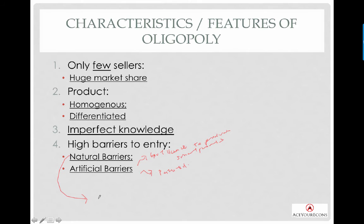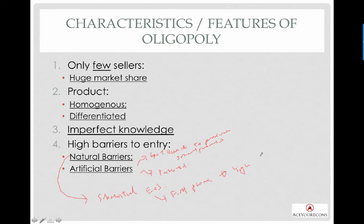For natural barriers to entry, firms have substantial economies of scale. Using Samsung and Apple as examples, in order to produce the first phone you will incur very high fixed costs — fixed costs in the production plant and in investing in technology. These are very high initial fixed costs. However, once you are able to produce your smartphone, you will enjoy substantial economies of scale.